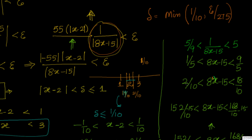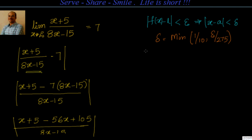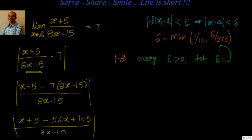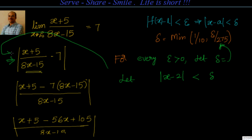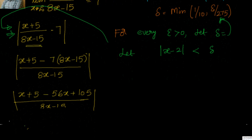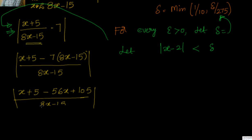Once we got this we can go ahead with the proof. For every epsilon > 0, let delta = min(1/10, epsilon/275). Let |x - 2| < delta. Then we proceed to evaluate |f(x) - L|.